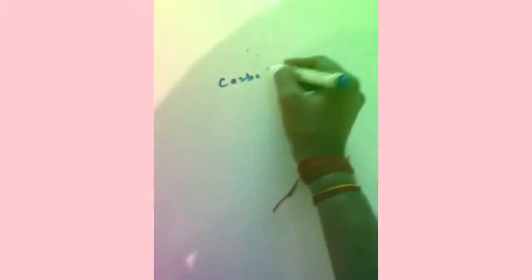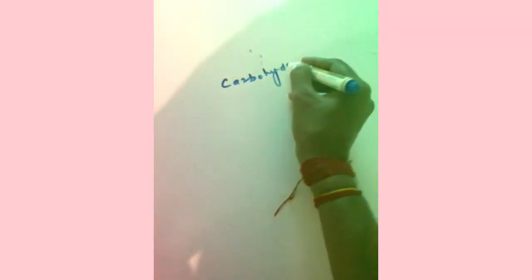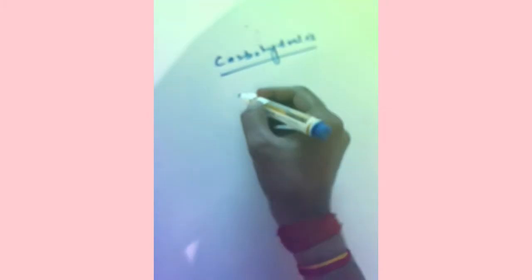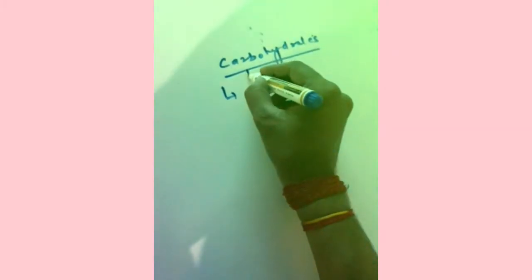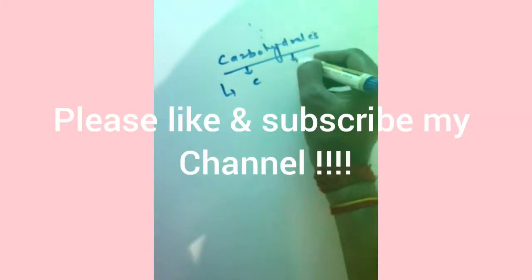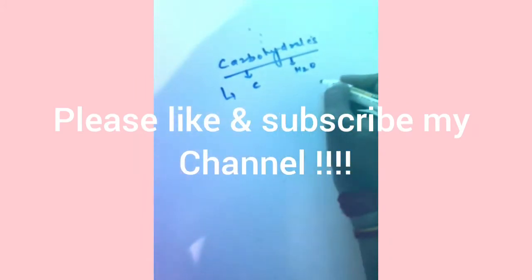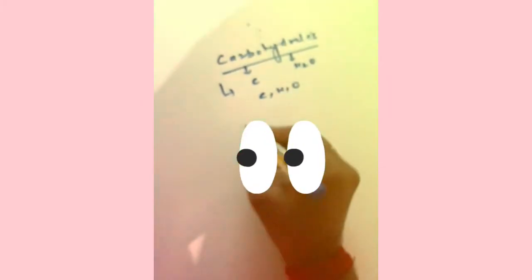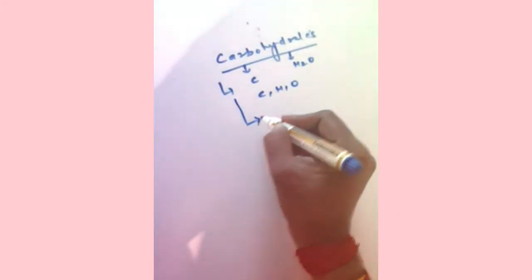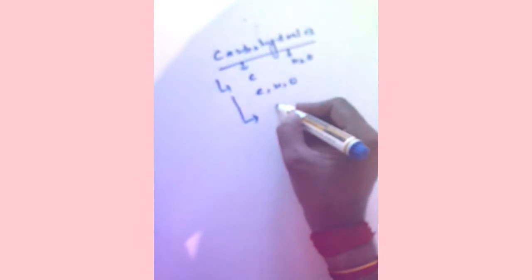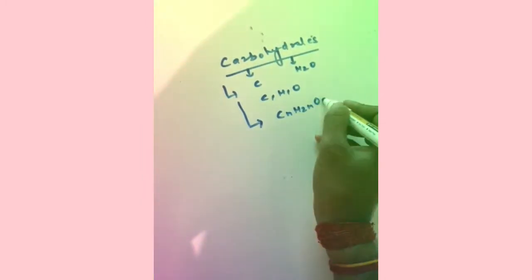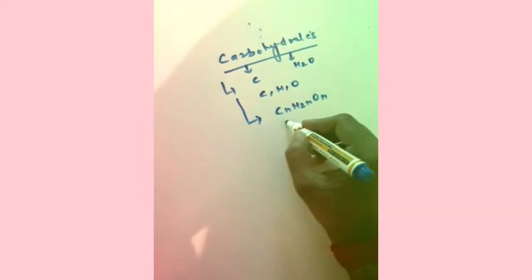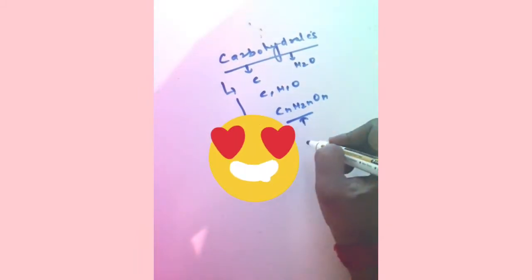Hello friends, today we are going to discuss carbohydrates. Carbohydrate is made up of carbon — 'carbo' means carbon and 'hydrate' means water — so it is made up of carbon, hydrogen, and oxygen. It follows the formula CₙH₂ₙOₙ, meaning all carbohydrates follow this formula.